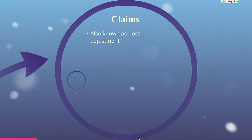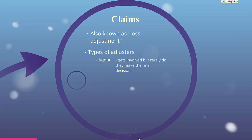Now let's discuss claims, also known as loss adjustment. There are several different types of adjusters. First, sometimes the insurance agent gets involved in claims adjusting — oftentimes they're the first person an insured calls after having a loss, and they may be required to collect certain information to send to the company, though they rarely make the final claim decision. Then there's a company adjuster — many companies have adjusters out in the field who pay claims as they occur, and they may go to the site of the claim or, in auto insurance, to the body shop.